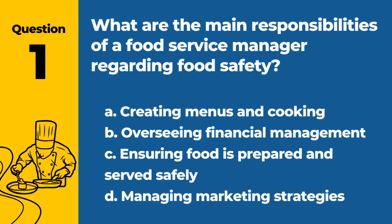Question 1. What are the main responsibilities of a food service manager regarding food safety? A. Creating menus and cooking. B. Overseeing financial management. C. Ensuring food is prepared and served safely. D. Managing marketing strategies. Answer: C. Ensuring food is prepared and served safely. The primary responsibility of a food service manager regarding food safety is to ensure that all food is prepared and served in a manner that upholds safety standards.